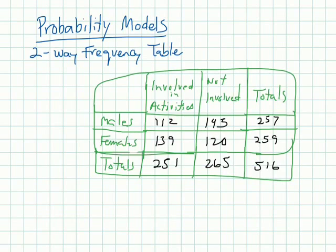So the first question says, what is the probability that a randomly chosen student is both female who is not involved in extracurricular activities?